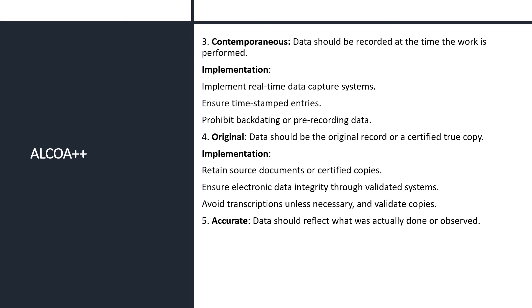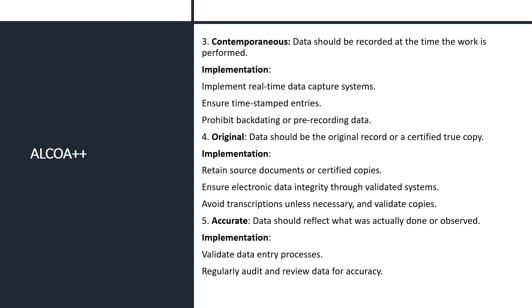The fifth letter, A, stands for Accurate. Accurate means data should reflect what was actually done or observed. For implementation: validate data entry processes so that automated systems are validated to ensure authenticity of data. Regularly audit and review data for accuracy, with QA or laboratory reviewers checking the data. Implement error-checking mechanisms so that automated systems can identify inaccurate data.